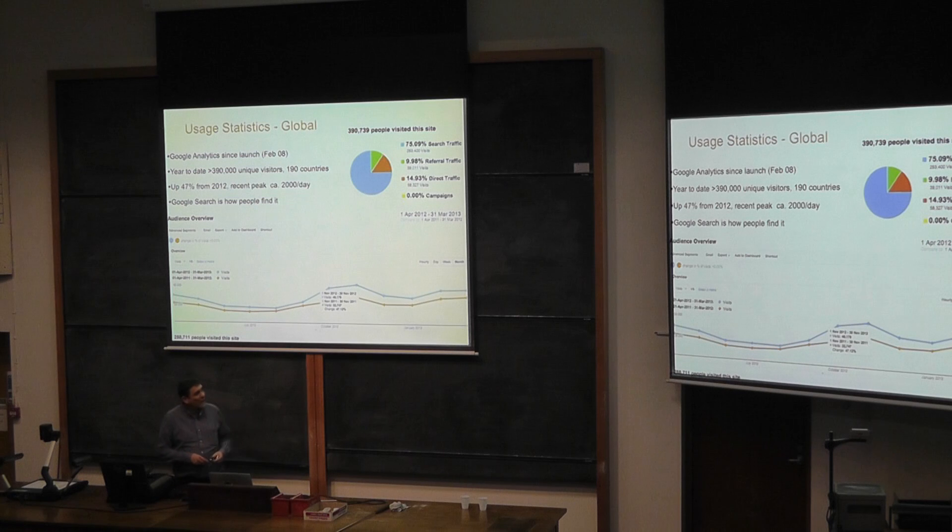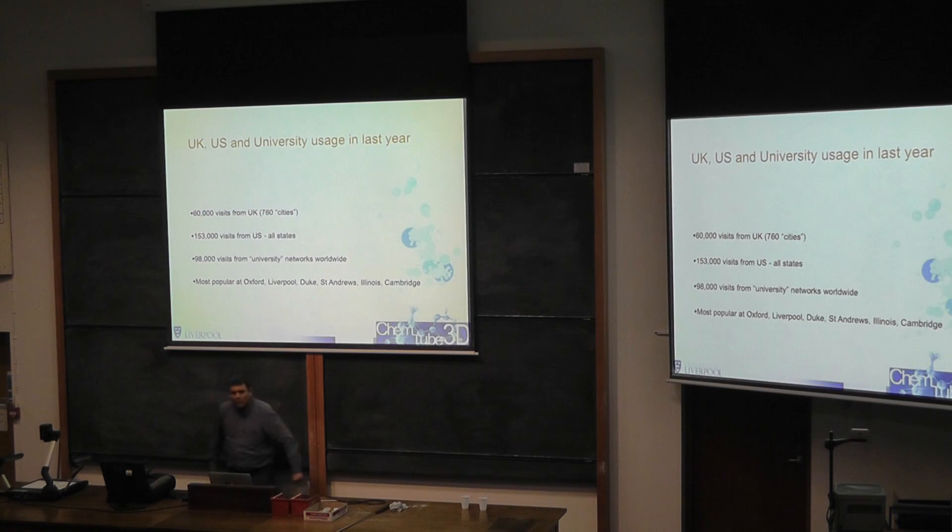The interesting question is, how do they find it? How do they know that it's there? Here's the map showing where they all come from. The darker the blue, the more common the visitors. So we get an awful lot from the States, Britain, India is very popular as well. We've got to hit this area of Africa - we're not doing well there. The graph at the bottom shows how it varies with the seasons. This is the summer, this is the first semester, this is Christmas, this is the second semester. The blue line is the most recent year, the yellow line is the year before. You can see that in November 2012 we had nearly 50,000 visits in the month.